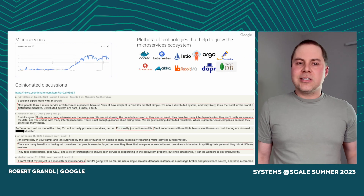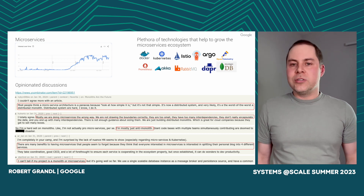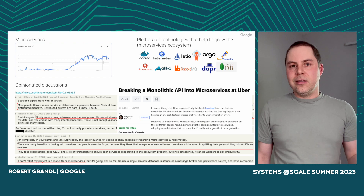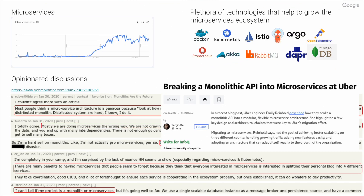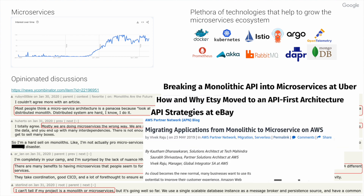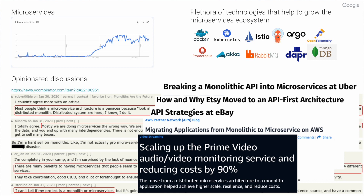All these opinionated discussions and confusion grew over time, because companies are confused too. For example, it was a trend for companies like Uber, Etsy, eBay, or even Amazon to migrate their monolithic architecture to a microservices-based architecture. While most recently, Amazon decided to move back to a monolith because of performance and cost reasons.